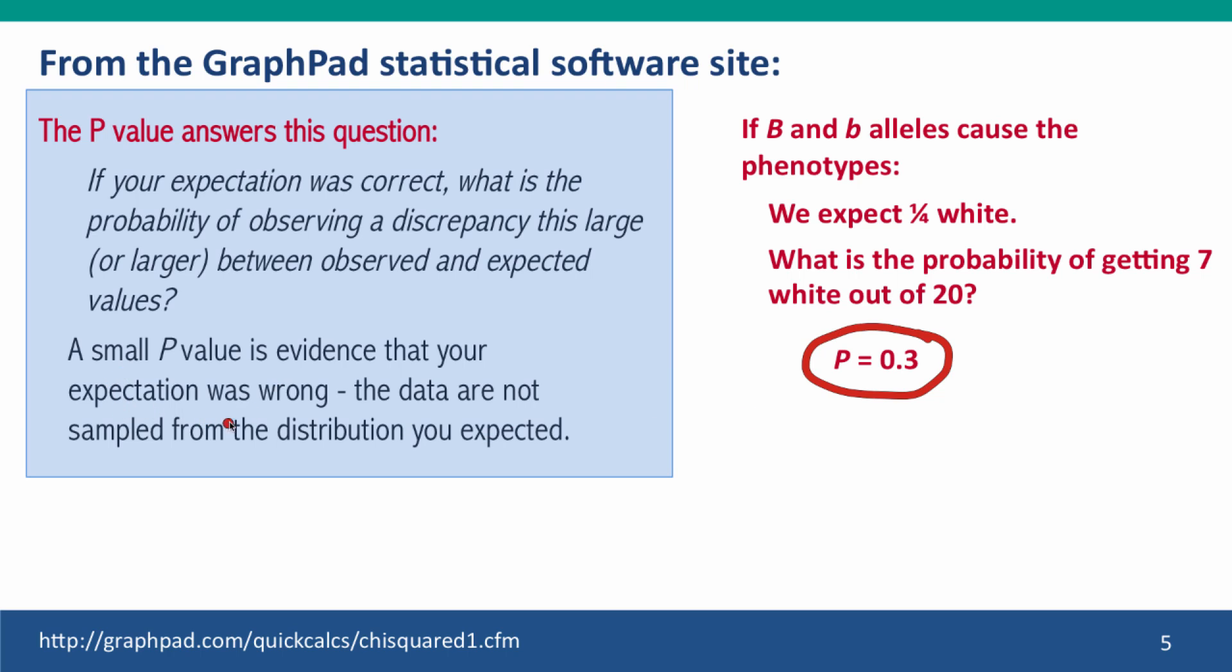The p-value tells us p equals 0.03. The site tells us a small p-value is evidence that your expectation was wrong, the data are not sampled from the distribution you expected. A large p-value says yes, this probability is entirely consistent with this real distribution.